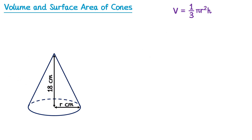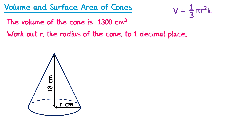For this next cone, the volume is 1300 centimetres cubed but we're missing r. We want to find the radius to one decimal place. Using the volume formula: 1/3 × π × r squared × h. We know h is 18, so 1/3 × π × 18 × r squared = 1300.